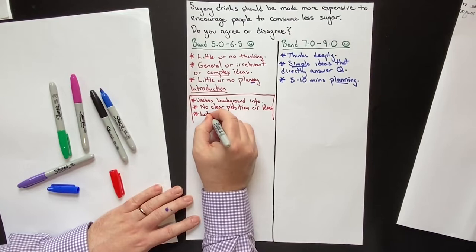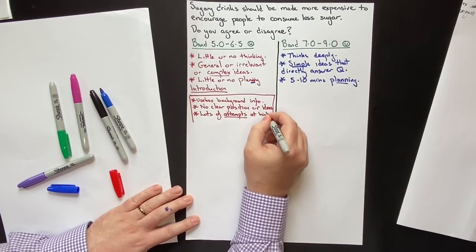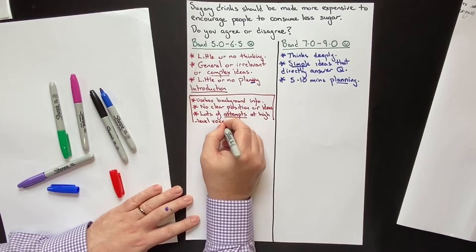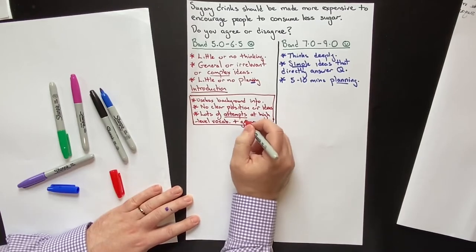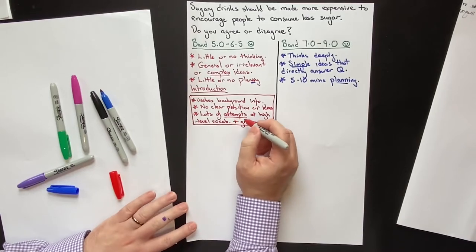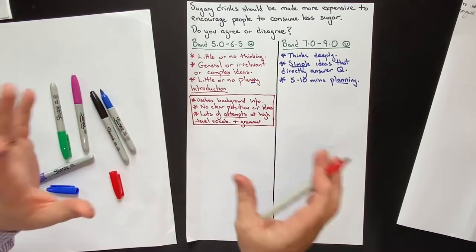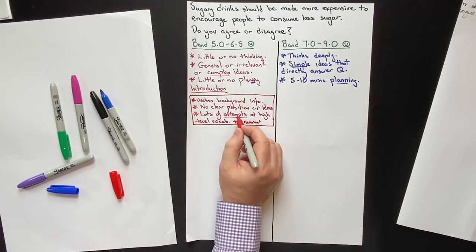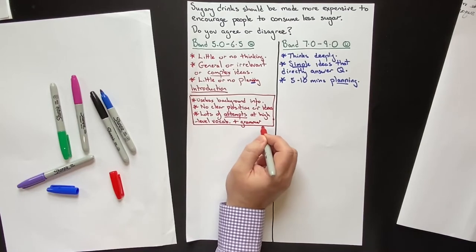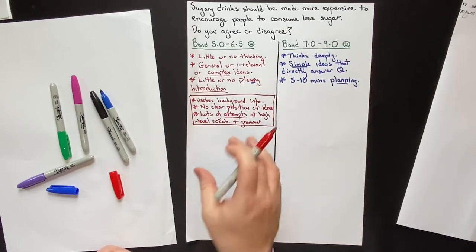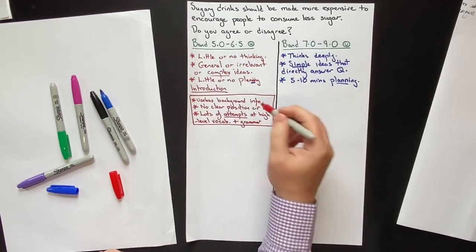The third common thing we see is lots of attempts at high-level vocabulary and grammar. After the useless background information, they try to insert lots of big, fancy, high-level words they've memorized — or seen in some YouTube video claiming 'learn these five Band 9 words and you'll get a Band 9.' They attempt to use these words, but nearly always they use them either inaccurately or inappropriately. To get a high score, your vocabulary and grammar should be accurate and appropriate. Memorizing phrases and big fancy words lowers your score — it does not increase it.